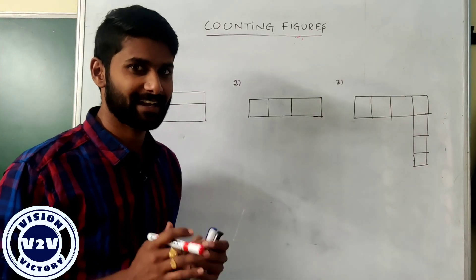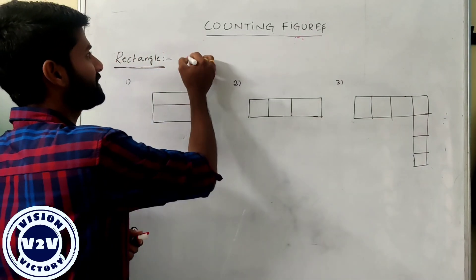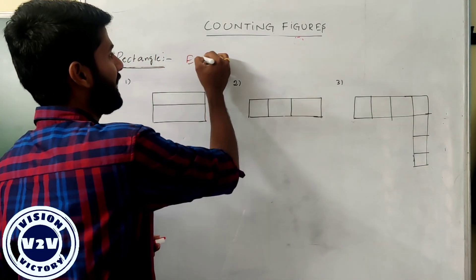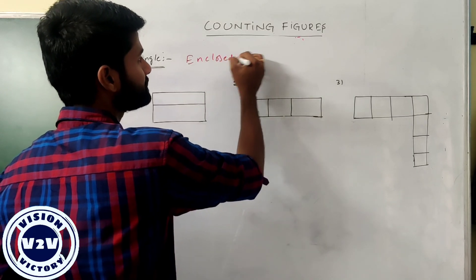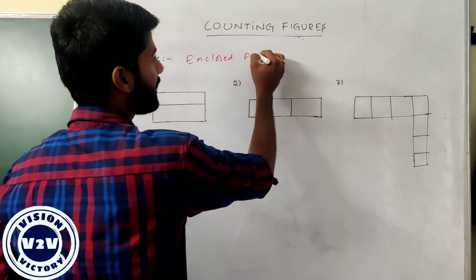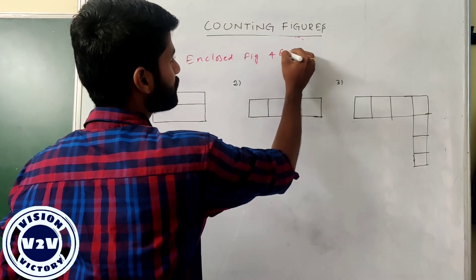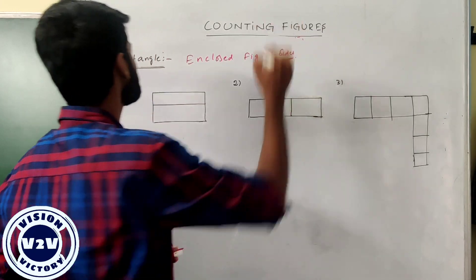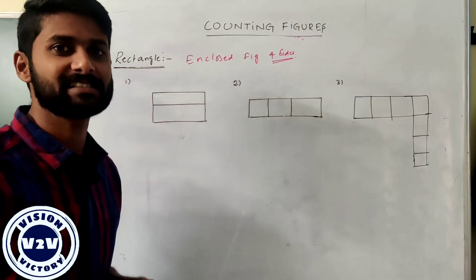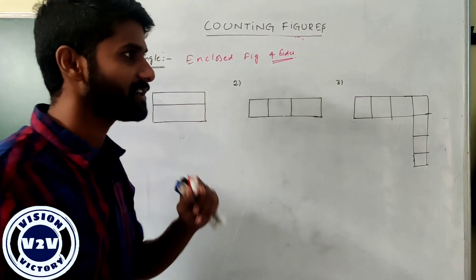Next: counting rectangles. The meaning of rectangle is an enclosed figure with four sides where L is not equal to B. If the L value is not equal to B, it is defined as a rectangle.